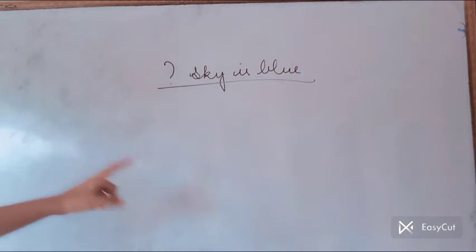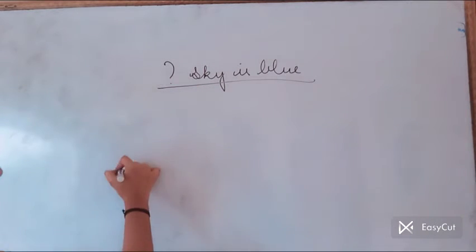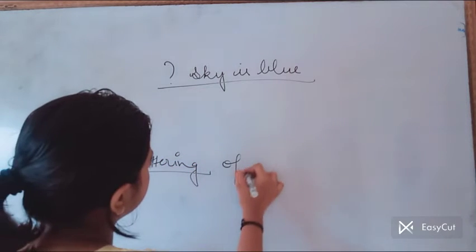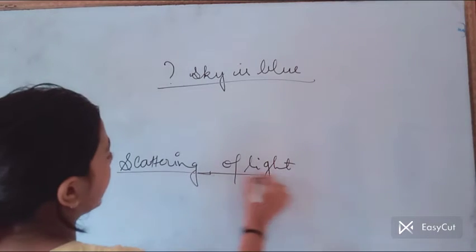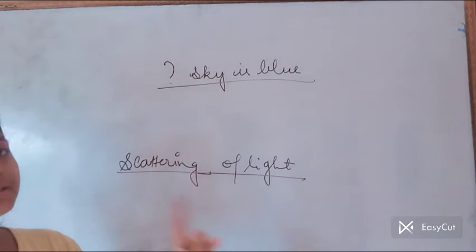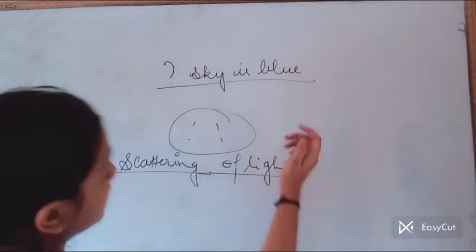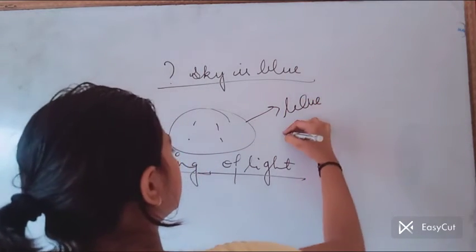This is a question which normally arises in everybody's mind. Let me explain why the sky is blue — this is very simple. You have already studied about scattering of light. The dust particles in the air scatter blue hues, meaning they scatter blue light.